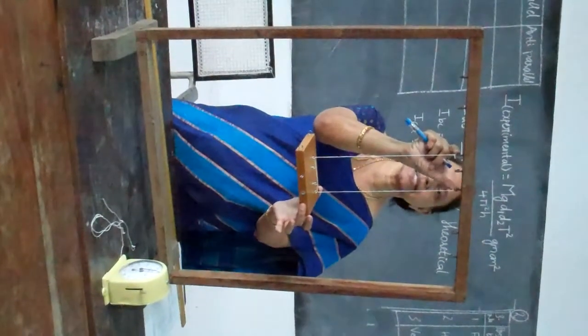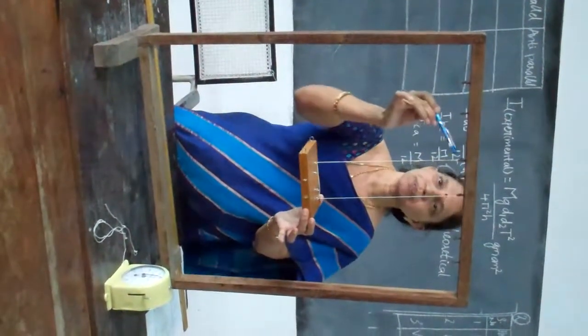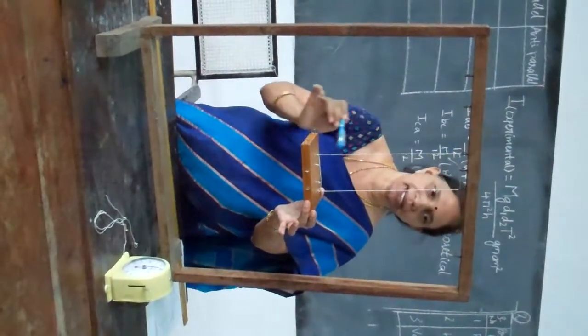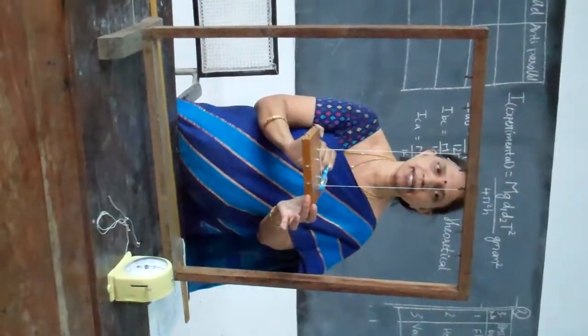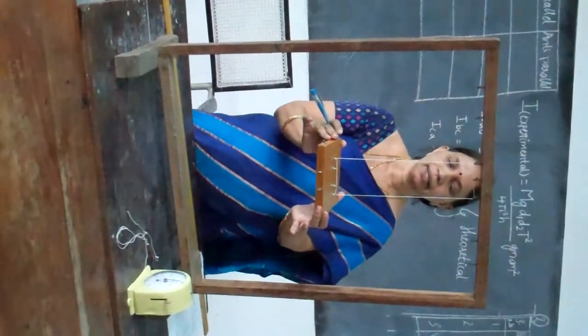And measure the distance here as 2D1, and this distance as 2D2. The point of suspension to the point here is your height. Make sure that this height is the same on either side so that it will be stable.